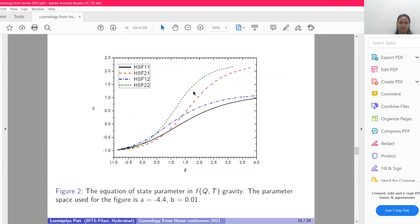This is the equation of state parameter graph. Here we take a equals minus 4.4 and b equals 0.01, our model parameter values. By taking α and β values, when we draw the graph, at late time the graph tends to minus 1. The behavior goes towards the Lambda CDM model. At early times, the graphs gradually decelerate, and then at late time it goes to minus 1.